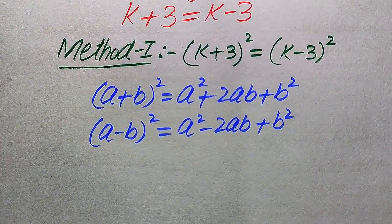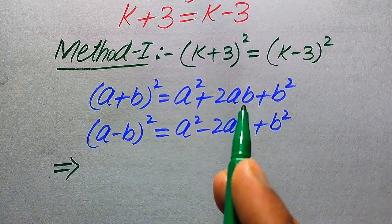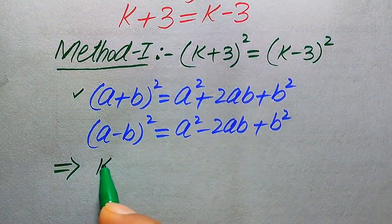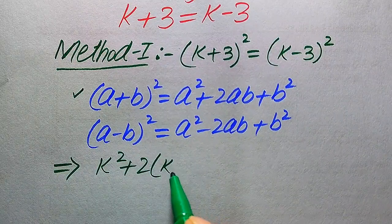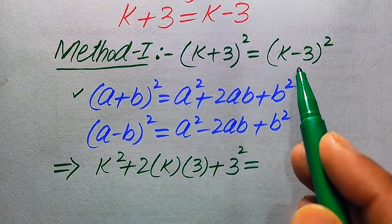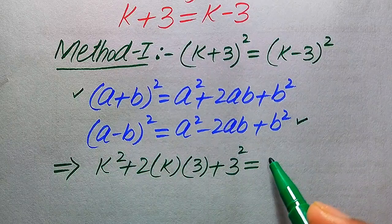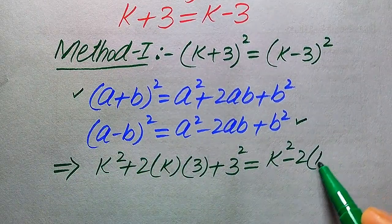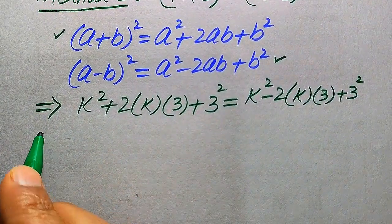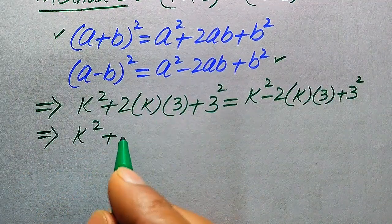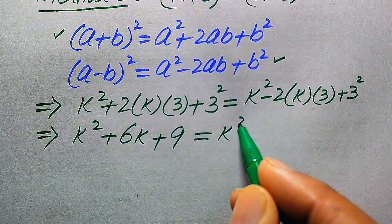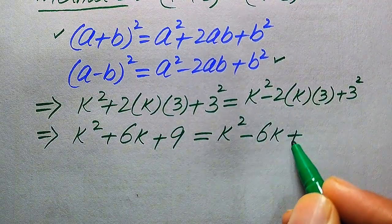Applying these two formulas to both sides of the equation, the left hand side becomes k² plus 2 times k times 3 plus 3², and the right hand side becomes k² minus 2 times k times 3 plus 3². Further simplifying, this gives k² plus 6k plus 9 equals k² minus 6k plus 9.